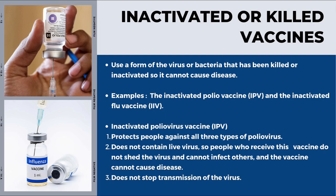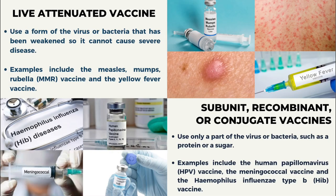People who receive this vaccine do not share the virus, and the vaccine cannot cause disease. The next type is the live attenuated vaccine, which uses a form of the virus or bacteria that has been weakened so it cannot cause severe disease.